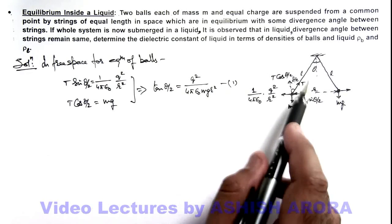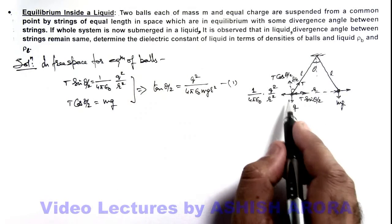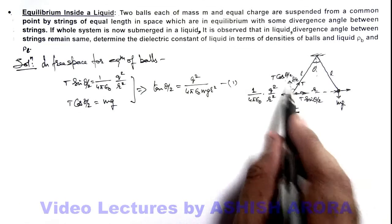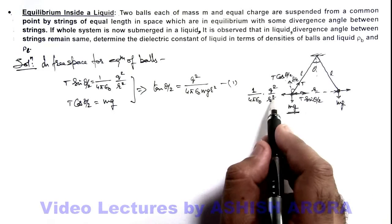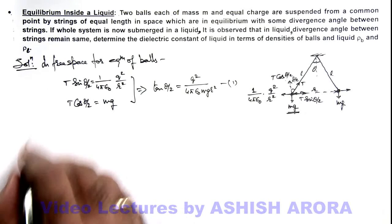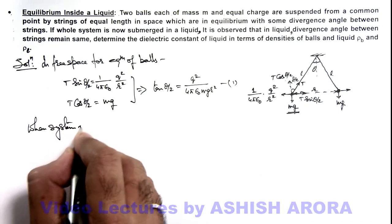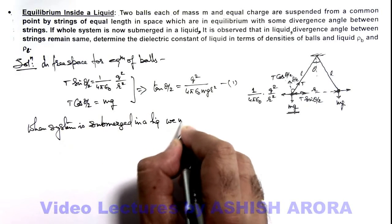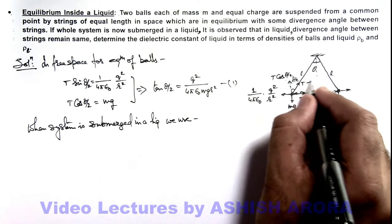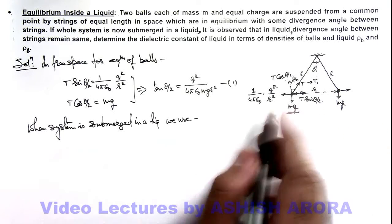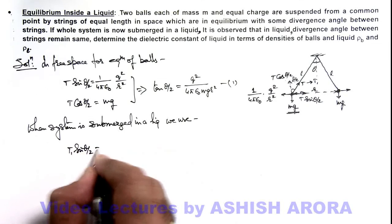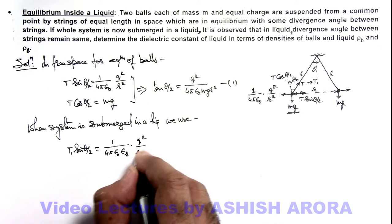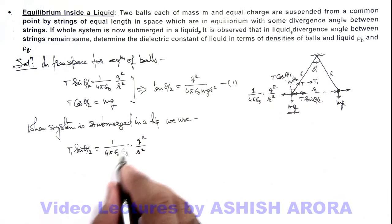Now if the whole system is submerged in a liquid as given, then in the downward direction, rather than the gravitational force, it will be the effective weight acting on it, which is the subtraction of the buoyancy force from the weight. The Coulombian force will also include the term of dielectric constant. When the system is submerged in a liquid, if the tension changes to T1, and since the angle of divergence remains the same, I can write: T1 sin(θ/2) is equal to the Coulombian force, written as 1 over 4π epsilon-naught epsilon-r, multiplied by q² over r², because within the liquid we need to include the relative permittivity or dielectric constant of the liquid.